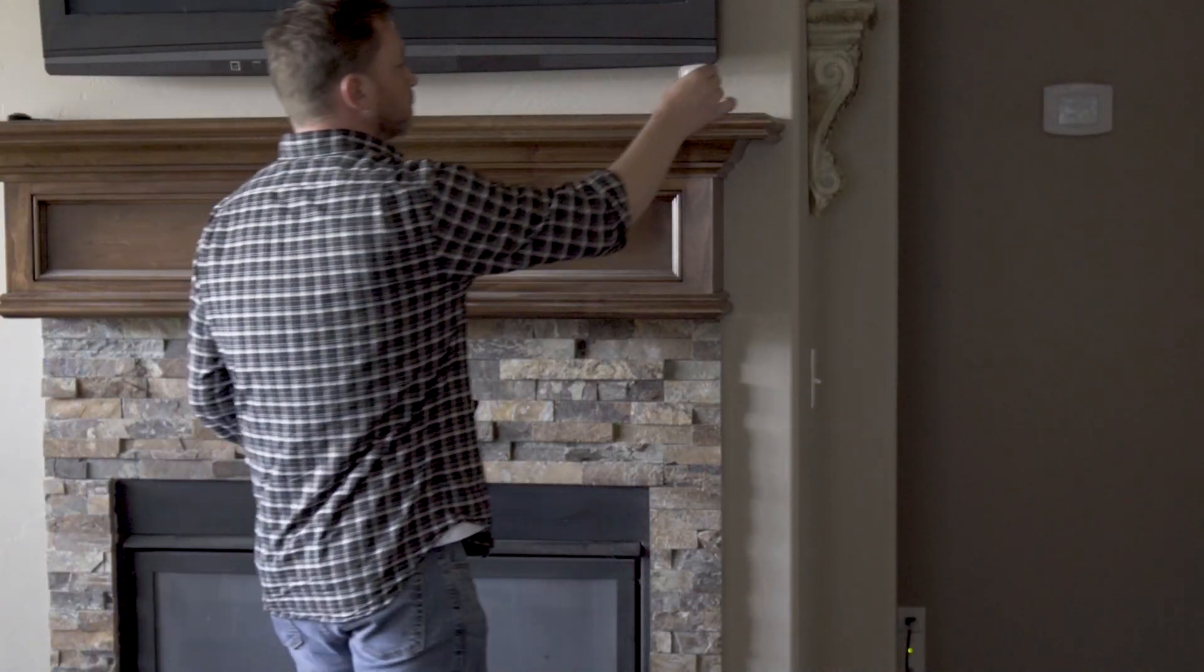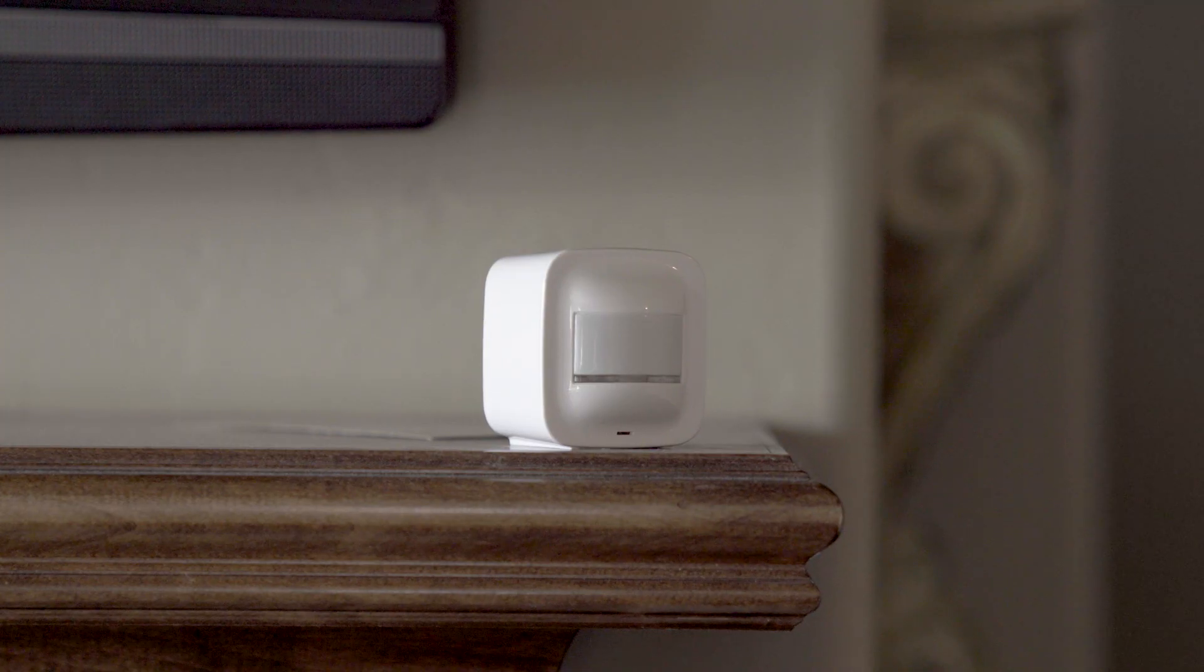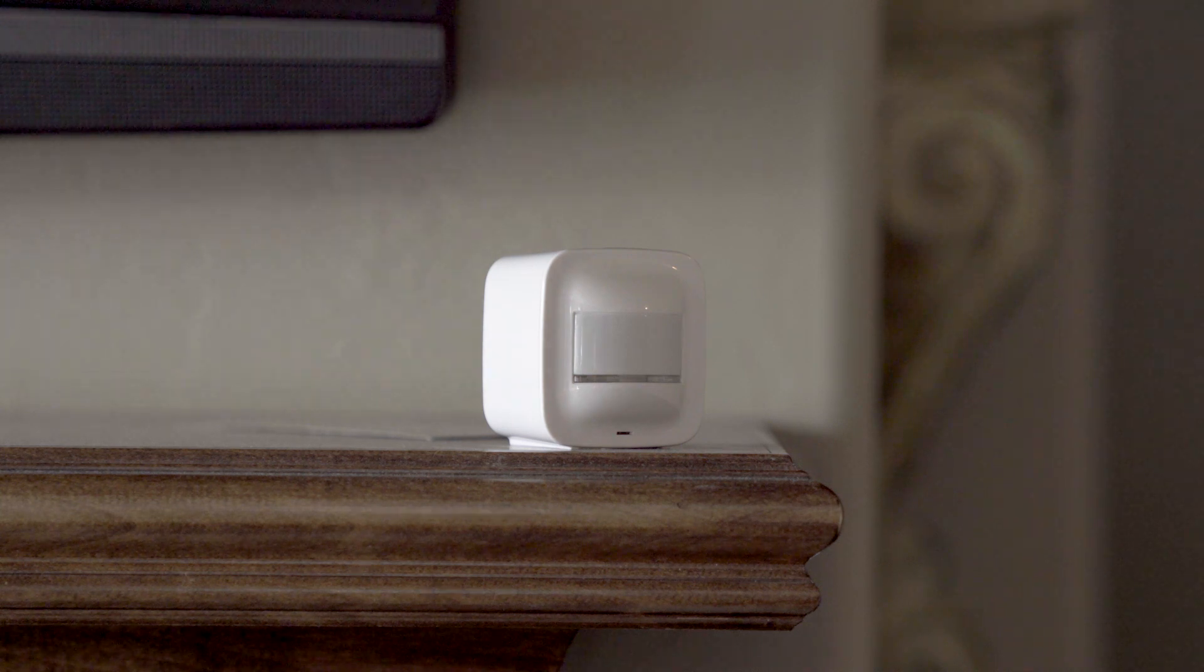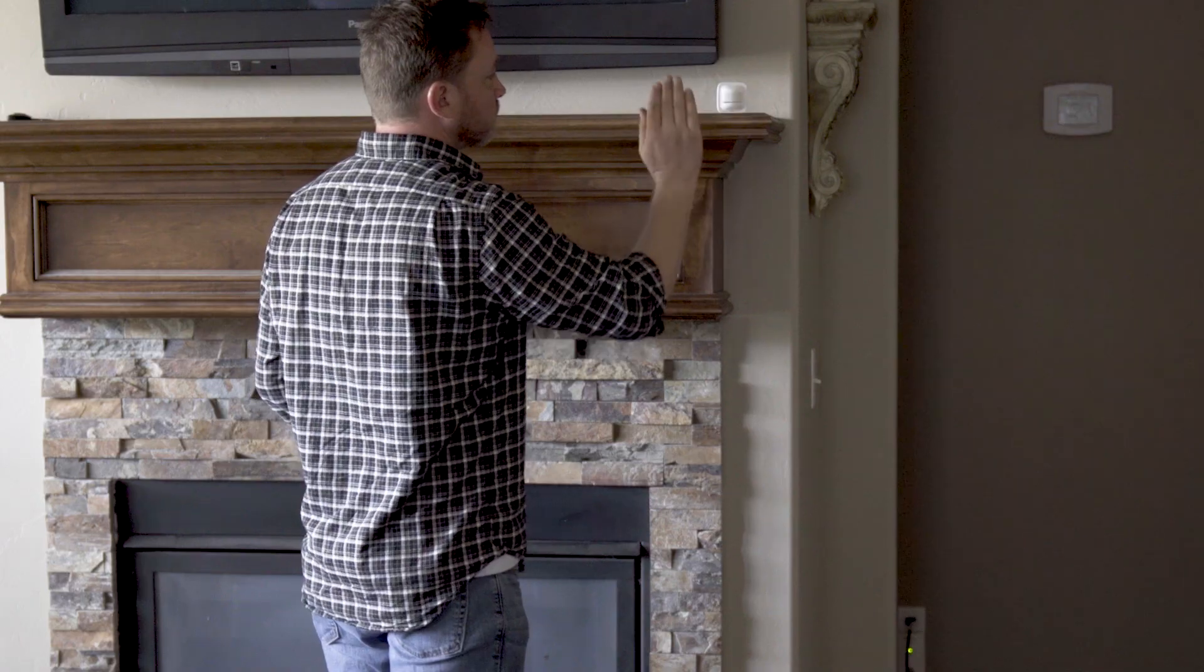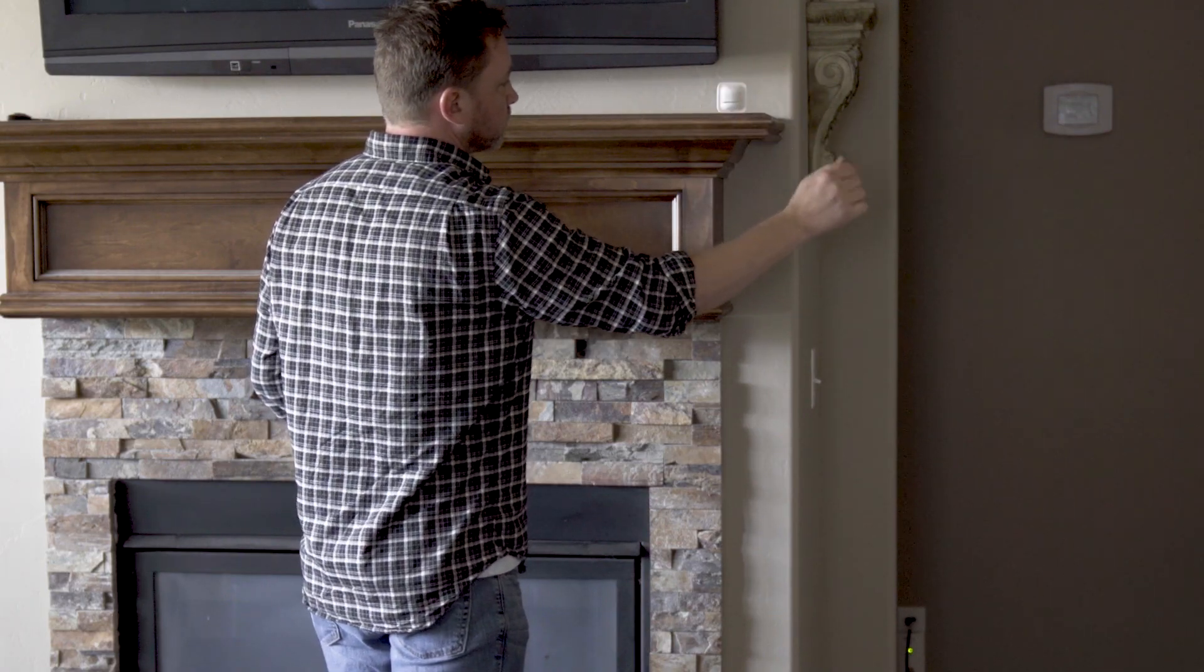For portable use, place the sensor on the edge of any flat surface that is 5 feet from the ground. Placing the sensor in the optimal position provides the greatest coverage area.